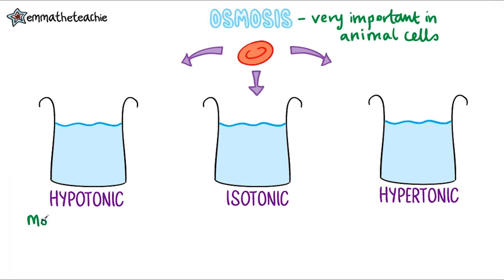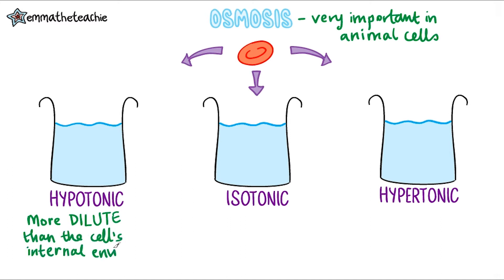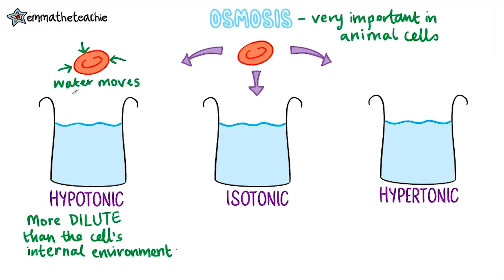The first one is a hypotonic solution. This means that it is more dilute than the cell's internal environment. Since osmosis moves water from a dilute solution to a more concentrated solution, water will move from the hypotonic solution into the red blood cell. As the water moves into the cell, it will stretch it, and if a lot of water moves in, the cell may even burst. This happens if there's a big difference in concentration, and of course, this kills the cell.